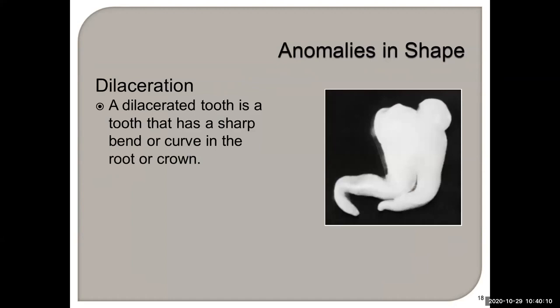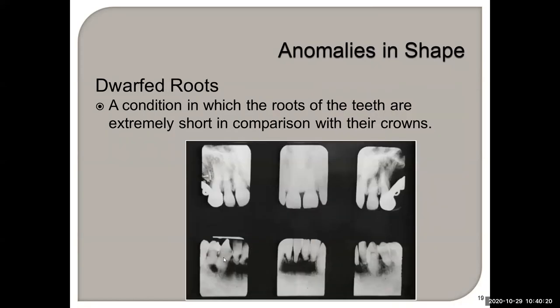Dilaceration is a sharp bend or curve in a tooth. Dwarfed roots is a condition where the roots of the teeth are extremely short in comparison to their crowns. When you're taking radiographs you need to determine: is this root shortening due to your vertical angulation, from orthodontic movement where roots resorbed, or is it true dwarfed roots? That's where having accurate radiographs comes in.